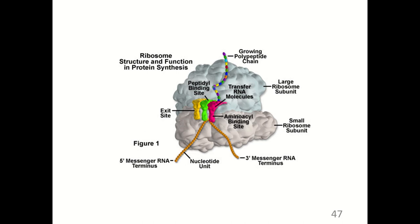The ribosome has two subunits — a large subunit and a small subunit — that are not attached when not synthesizing proteins. Protein synthesis initiates when these subunits join together, activating the ribosome. The ribosome then synthesizes proteins by reading a messenger RNA molecule and adding the appropriate amino acids to the growing polypeptide chain.